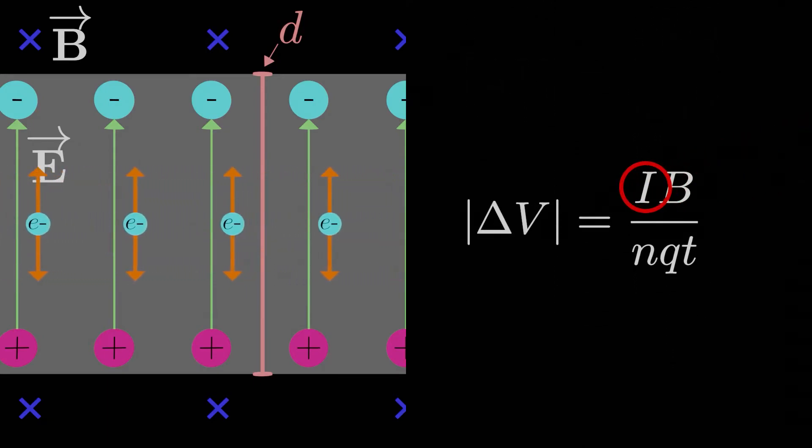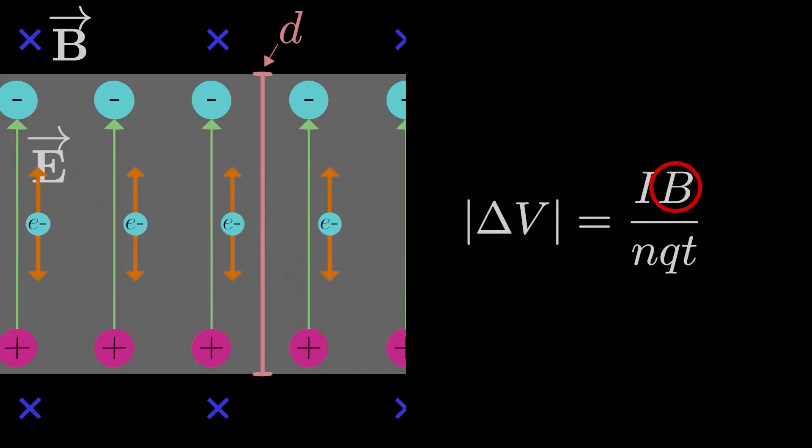The current times the magnetic field strength, all divided by the number of charge carriers per unit volume, times the charge on each charge carrier, times the thickness of the slab.